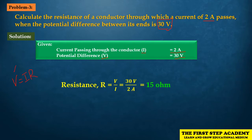Here, V is the potential difference, I is the current, and R is the resistance. Since we need to find resistance R, we rearrange Ohm's law. Turning the formula around gives us R = V divided by I.